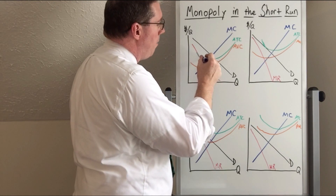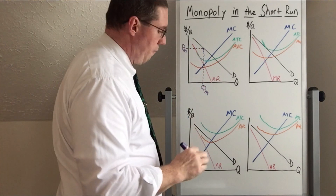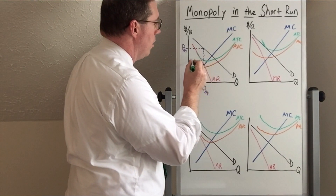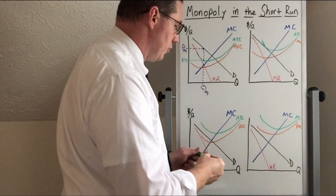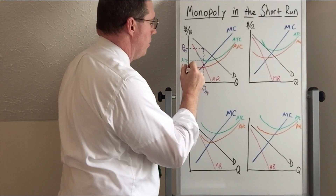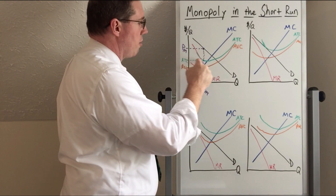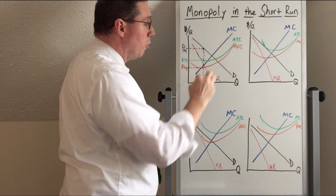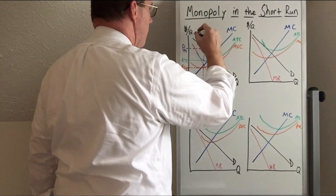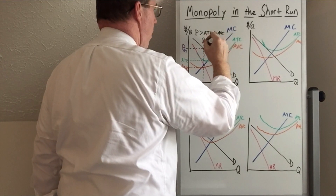We go up to the demand curve and over, and that is the profit-maximizing price. From there we determine the average total cost at that quantity by going to the ATC curve. We can also identify average variable cost where the quantity intersects the AVC curve. We can see this large rectangle — price times quantity is total revenue, and average total cost times quantity is total cost, which is smaller than total revenue. Therefore this rectangle is the profit rectangle, because price is greater than average total cost, which is greater than average variable cost.